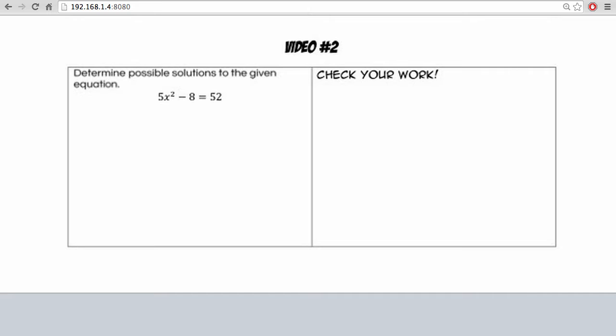So we're asked to determine possible solutions to this given equation. We have 5x² - 8 = 52.